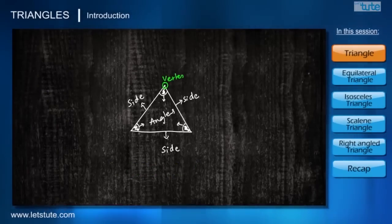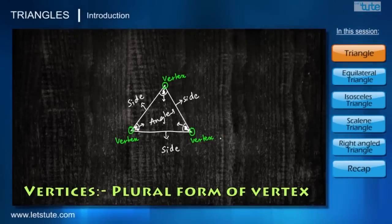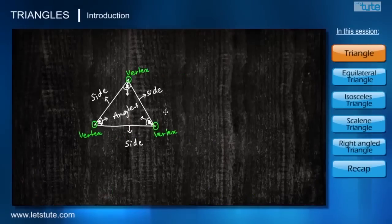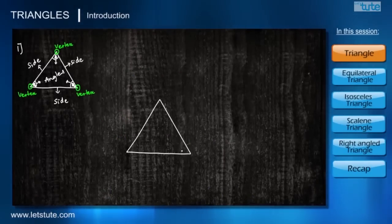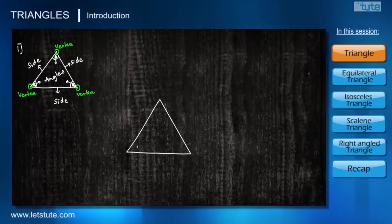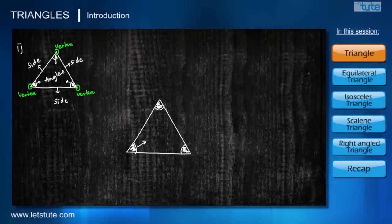Triangles have three endpoints and each endpoint is called a vertex, and all the endpoints together are called vertices. Now that we are familiar with the shape triangle, let's learn some important things about it. The most important thing we should know about triangles is that they are such shapes that when we add the measures of all three angles, it will always give 180 degrees.